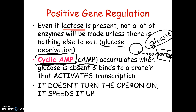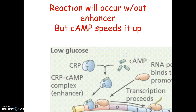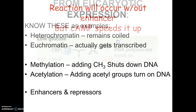Cyclic AMP doesn't just activate the operon — it enhances it, turning it on full speed. Operons can not only be turned on and off but can also be enhanced to work faster. The benefit is that just because lactose is present doesn't mean you need the operon running at full speed if there's other food available. But if there's nothing else to eat, cyclic AMP acts as that enhancer and activates it fully.